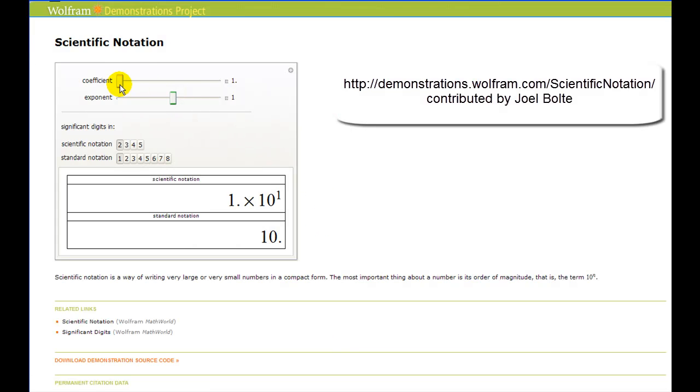Let's start off with some very basic examples. One times ten to the power of one, that's just one times ten, or ten. As I increase the power on ten, we can see the number in standard notation or decimal notation is getting larger.